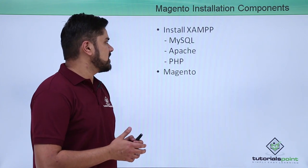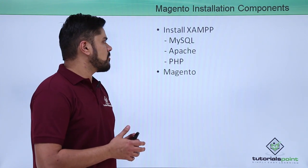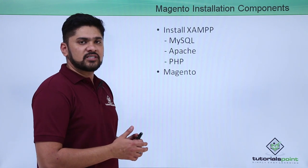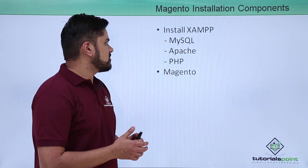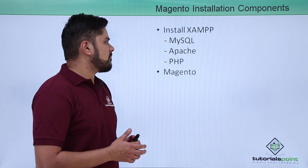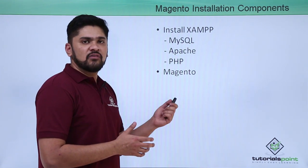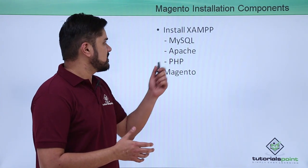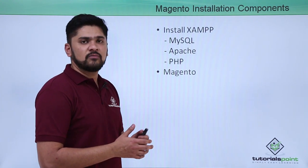After we have installed XAMPP, we will first create a database in MySQL, which is now known as MariaDB. Then we will start Apache and MySQL. After that we will link our Magento installation with XAMPP. Now we will see how we can install XAMPP.